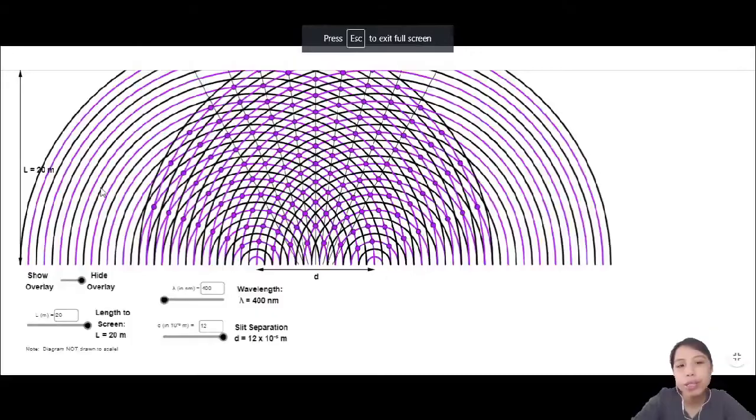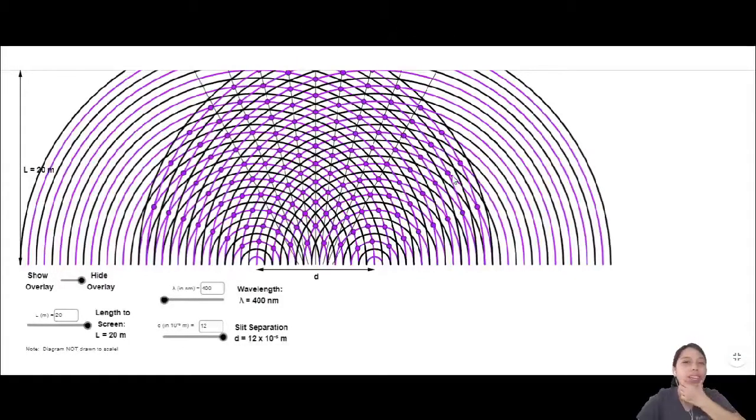What happens when you change certain variables? Look at this beautiful pattern. Okay, so there are a few things you can change in these kinds of experiments. So yeah, we know the interference, they got a nice pattern, constructive, destructive, constructive, destructive.